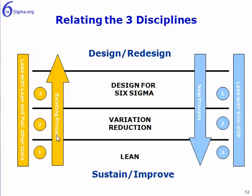So when you've got an existing process, start with lean, then go to the variation tools, and then finally if need be, go to the DFSS tools. When you have a new process, start with the DFSS tools, and then go to the variation tools and the lean tools. That's how the three circles, or the three disciplines of Six Sigma, interact with one another.